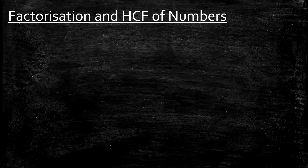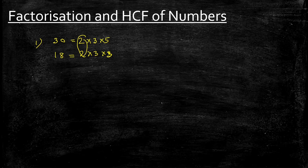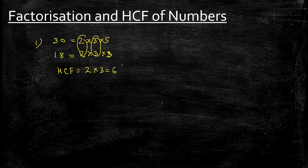Let's take the numbers 30 and 18. First, we will list out the factors as products of prime factors: 30 is 2 × 3 × 5, and 18 is 2 × 3 × 3. We see that 2 is common as well as 3, so the HCF, the highest common factor, would be 2 × 3, which equals 6.